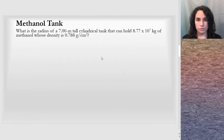An example for density, mass density is methanol tank. It says, what is the radius of a seven meter tall cylindrical tank that can hold 8.77 times 10 to the seventh kilograms of methanol, whose density is 0.788 grams per centimeter cubed?